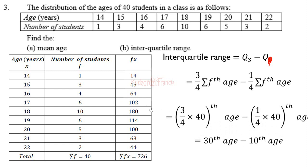How do we get the 30th age? We need to come to the table and start adding the frequency cumulatively from the top here. So adding from the top, we have 1 + 3 which is 4, + 4 that will give you 8, + 6 that will give you 14.